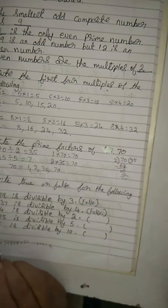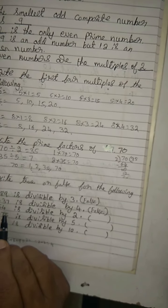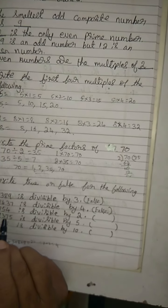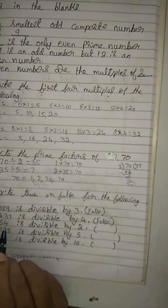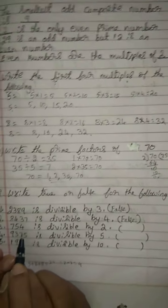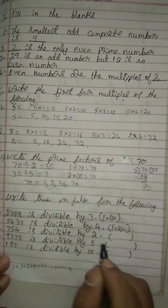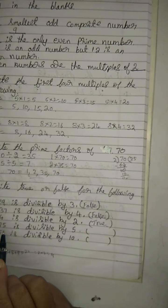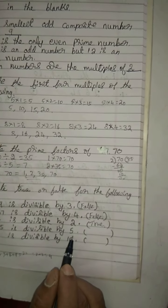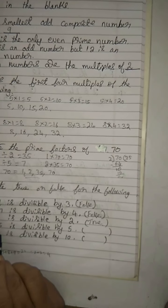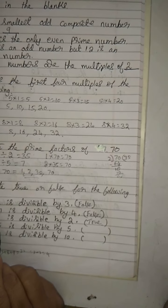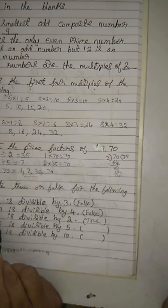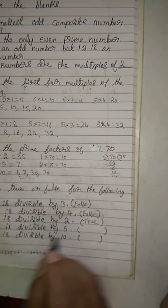7,54 is divisible by 2 — yes, divisible by 2. How? Because in the 1's place there is an even number. If an even number is in the 1's place, it is divisible by 2. So true. 9,375 is divisible by 5 — yes. Because in the 1's place it must be 0 or 5. It may be 0 or 5 — in 1's place, it is divisible by 5. So it is true.